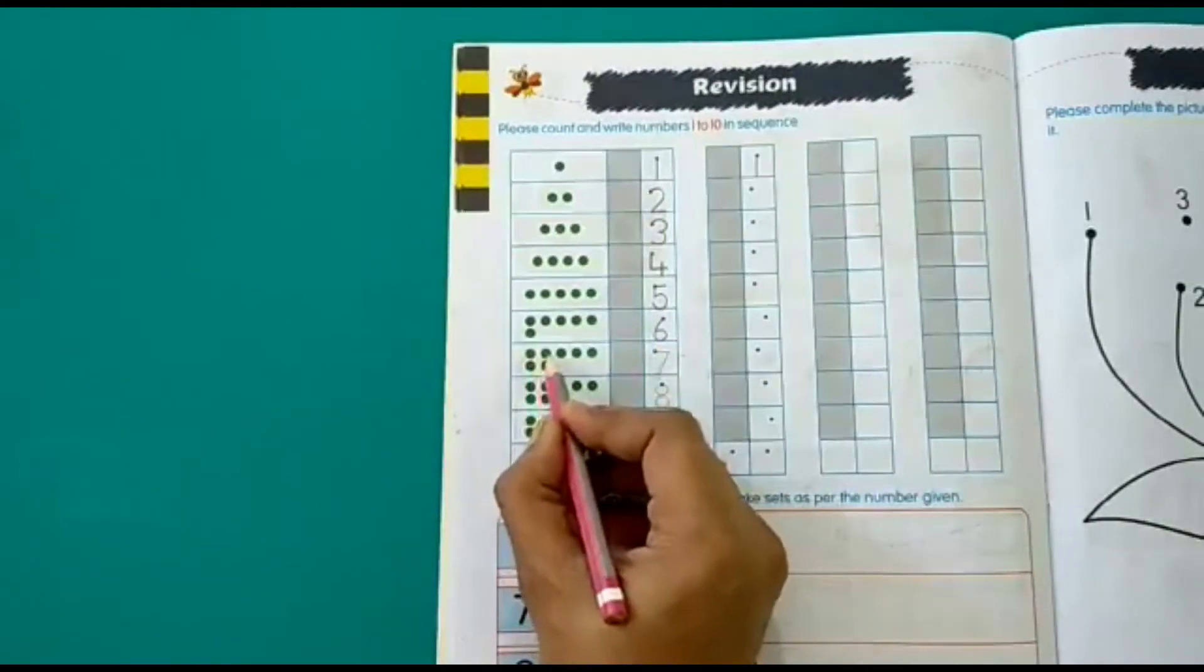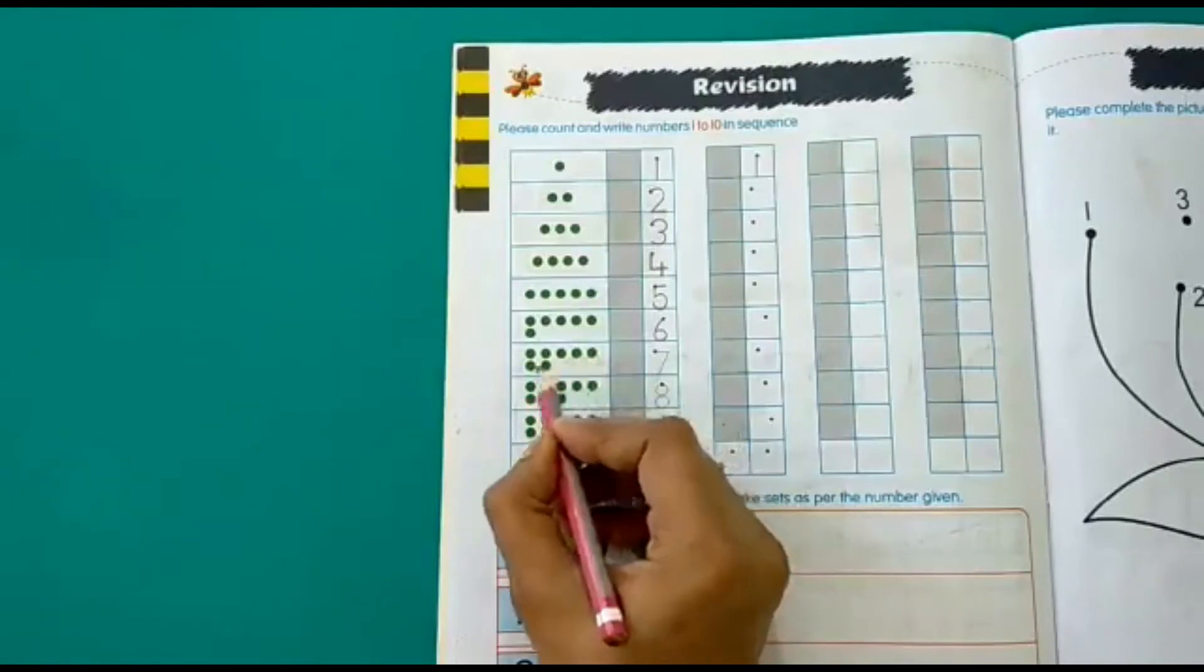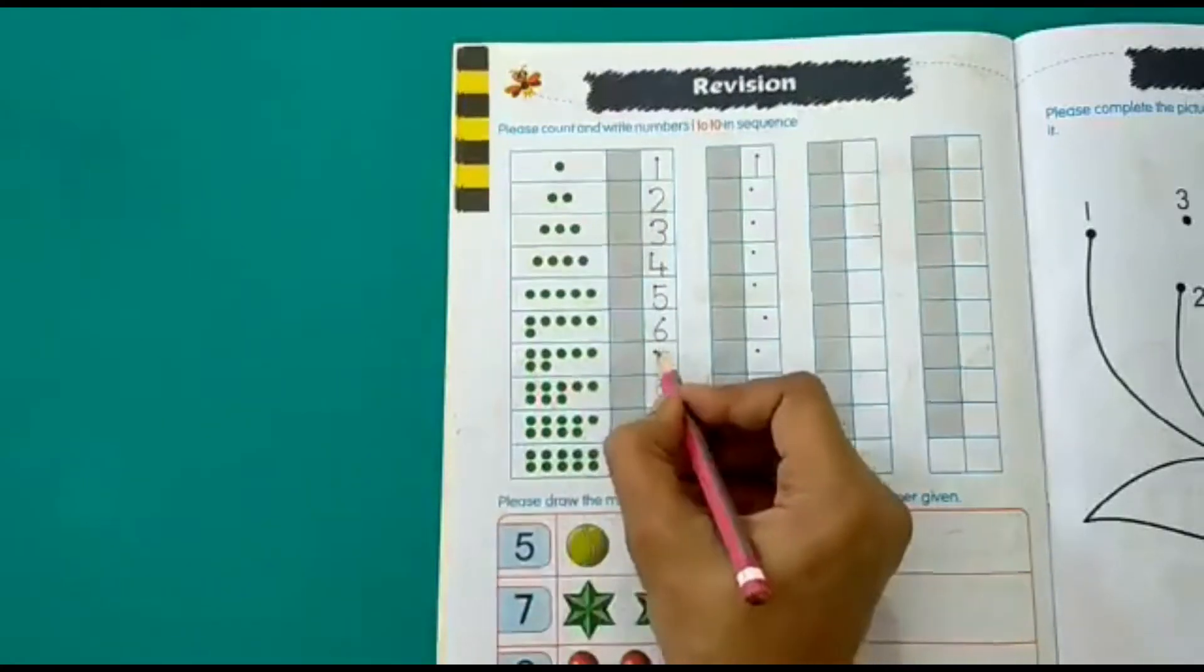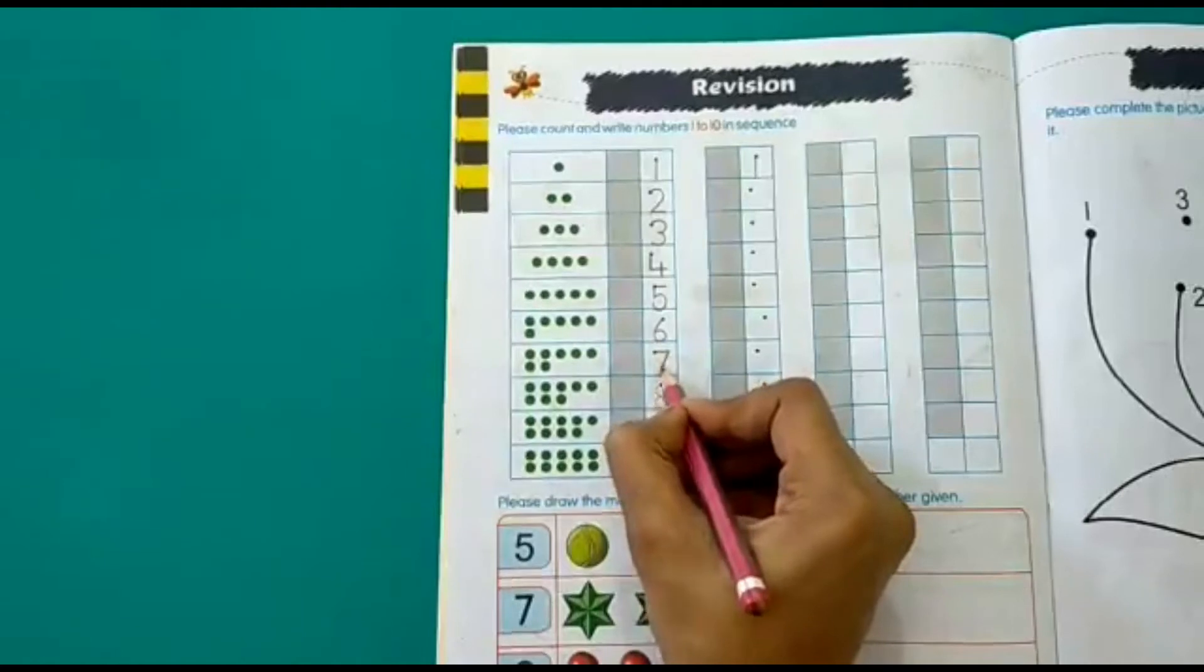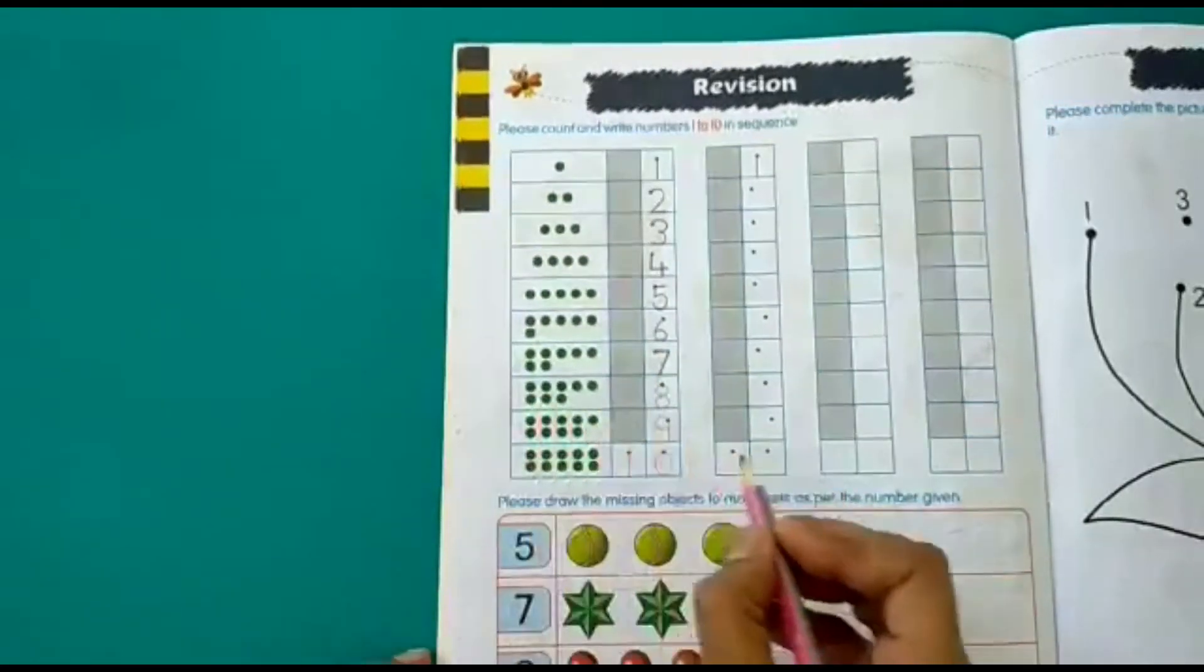1, 2, 3, 4, 5, 6, 7. So let's write 7. Now let's count the next box.